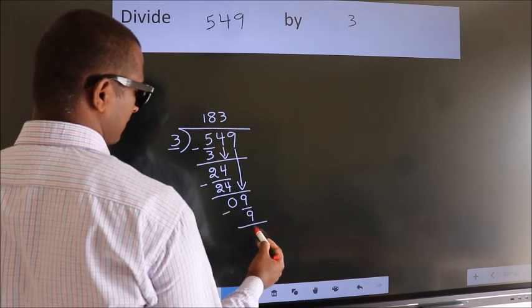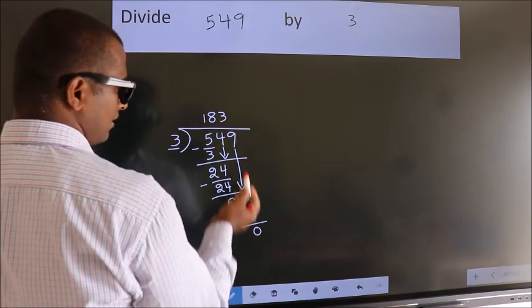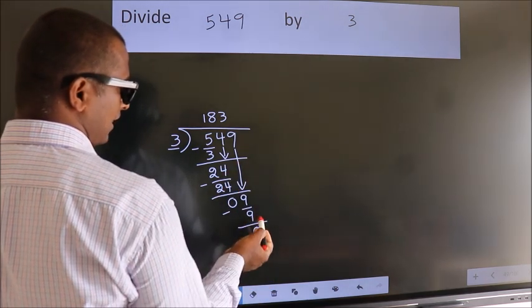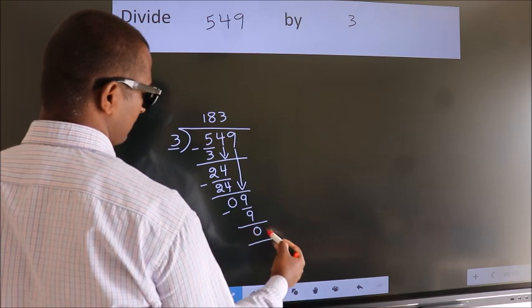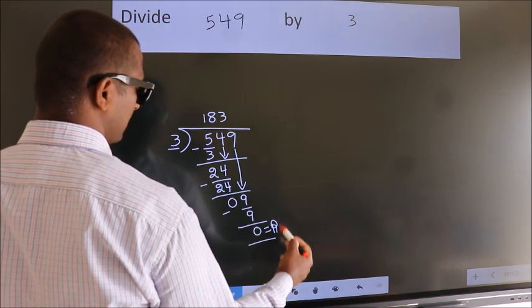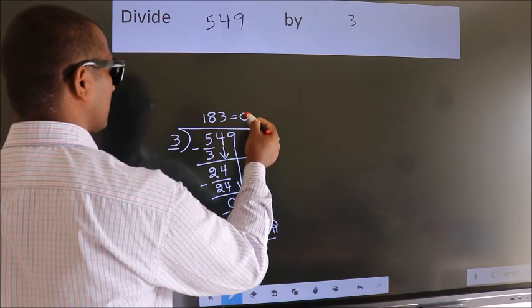Now we subtract, we get 0. No more numbers to bring down. So we stop here. This is our remainder. This is our quotient.